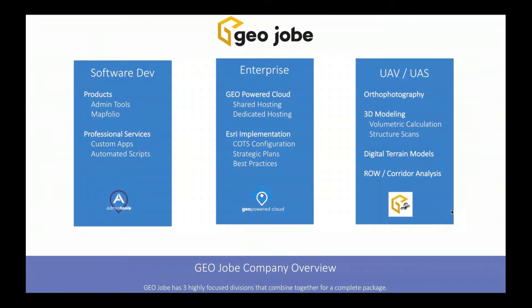We also offer professional services for custom application development or automated scripts. Our enterprise team offers Esri implementation of COTS configurable products like Survey123, Collector, and Operations Dashboard. We also do strategic plans and best practices. Our enterprise team handles our partnership with Amazon for shared hosting of geospatial data, as well as dedicated hosting — a form of managed services where you have your own box with full administrative access while we handle maintenance, software updates, and security.